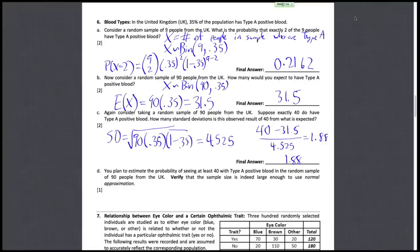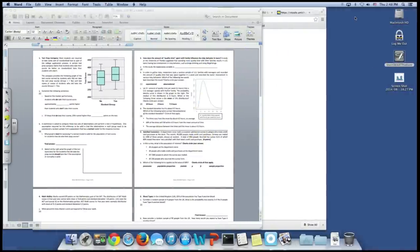So it's 1.88 standard deviations away. Alright. Our last blood type question. Your plan is to estimate the probability of seeing at least 40 with type A blood in the random sample. We don't want to do this though with the binomial distribution, as that would be a lot of probabilities to compute. So we want to use the normal approximation. But we need to first verify that the sample size is indeed large enough to use this.